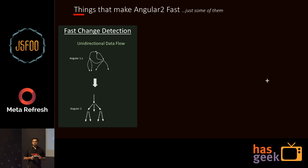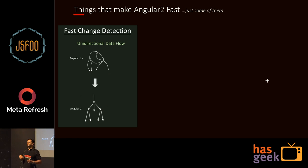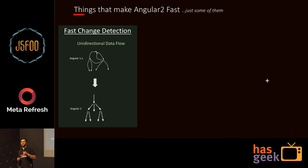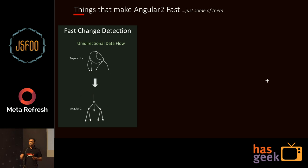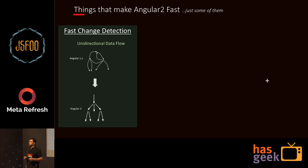The first thing is change detection. In Angular 1, change detection used to be more cyclic in nature — parent updates a child, the child goes back and updates a parent, and so the change detection could go into a cycle. But now with Angular 2, it's a tree. Change detection just flows all the way down and it's very fast.